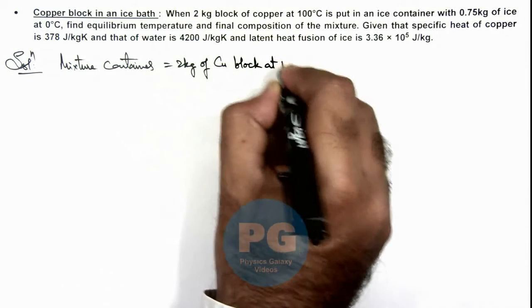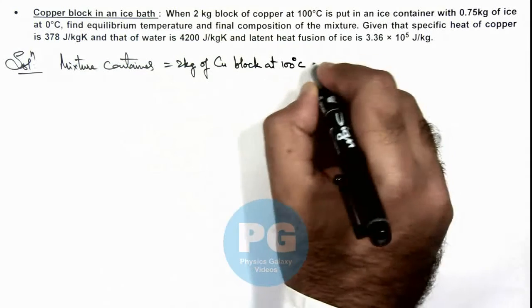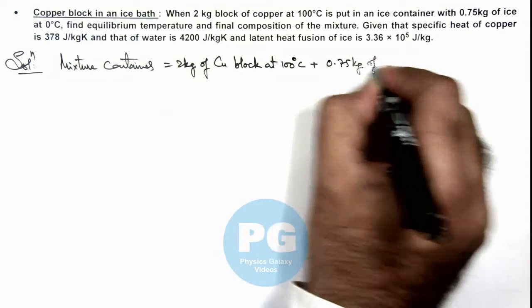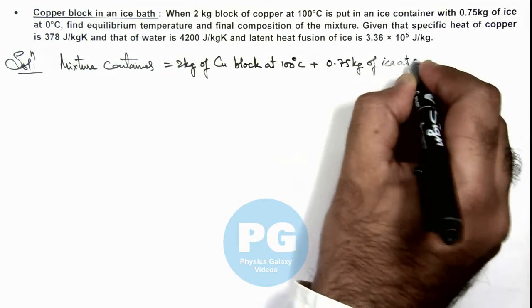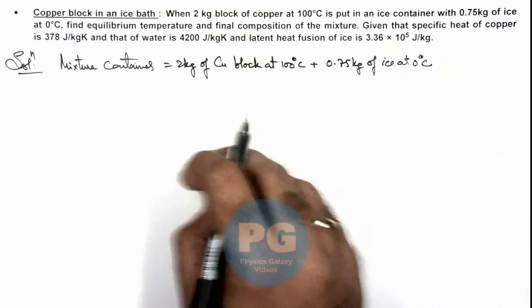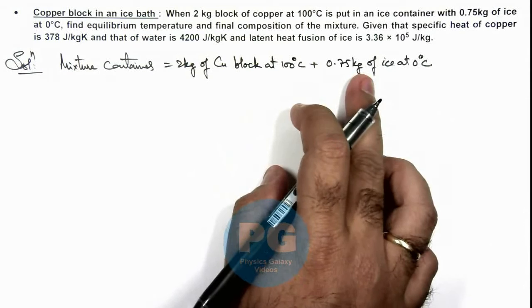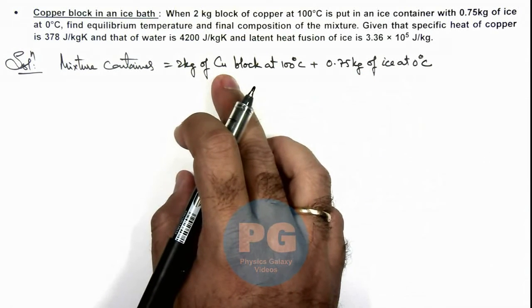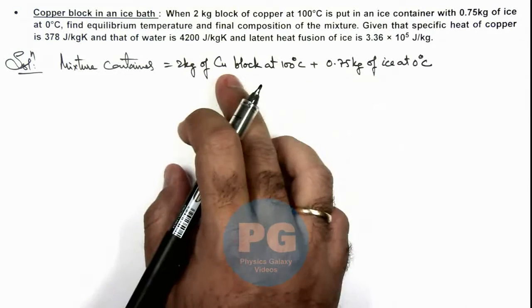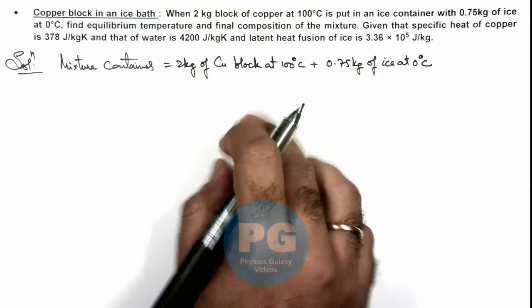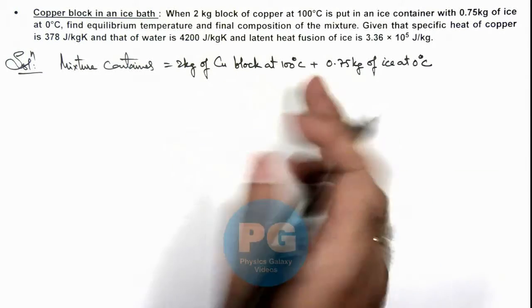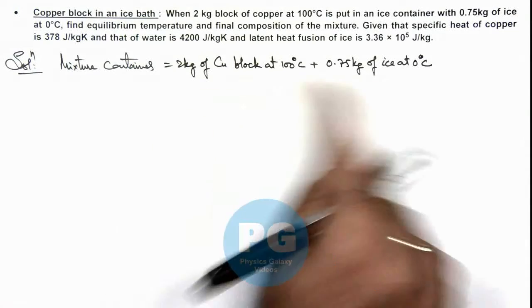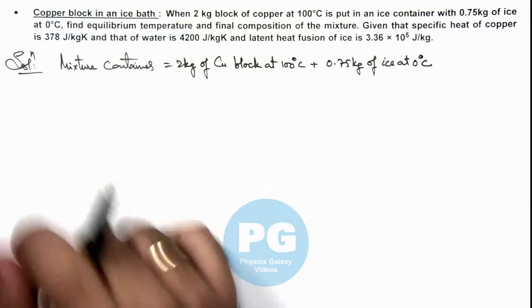Plus this 0.75 kg of ice at 0°C. So if we melt the ice it will release some heat, and when the copper block will come down at 0° it'll release some heat. So let's transform both of these at 0°C: ice to water and block at 0°C.